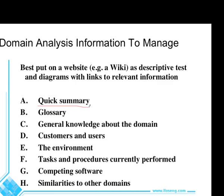The first wiki topic is a quick summary: what is this domain all about? The second is a glossary of terms — define all the terms that are of interest in this domain. The third is some general knowledge and background: things people should read, pointing to websites and documents people should read in order to learn about the domain.